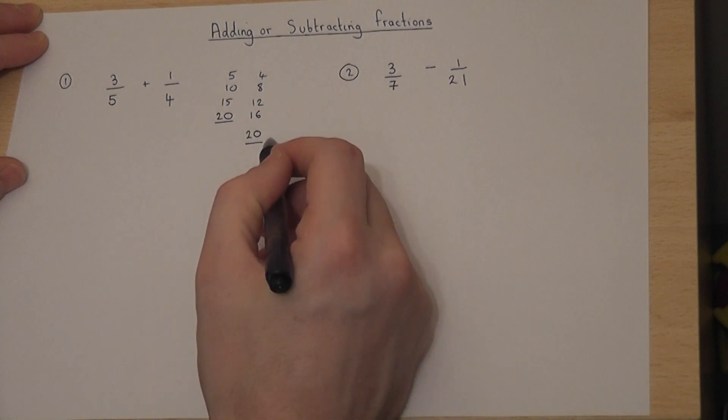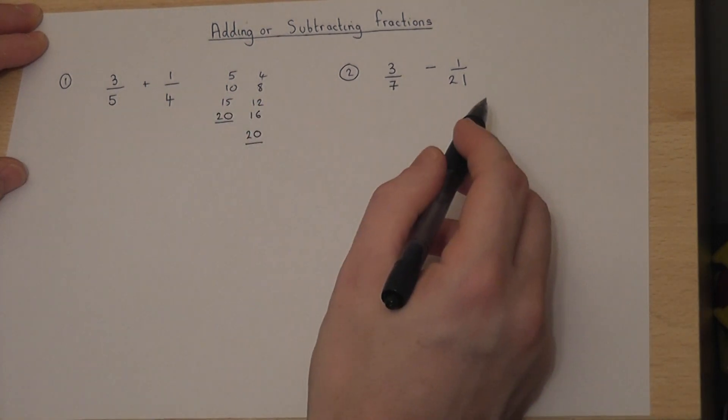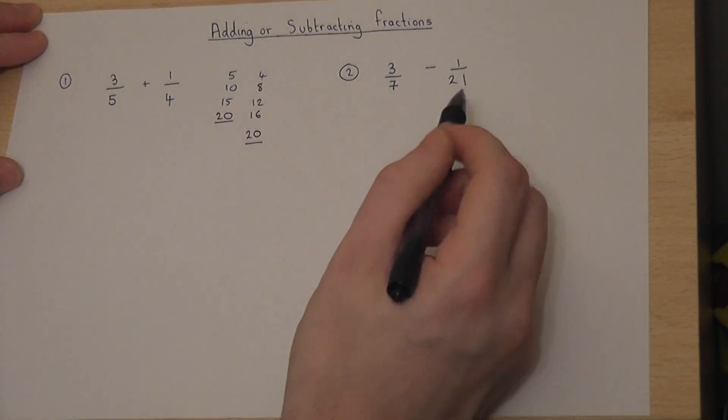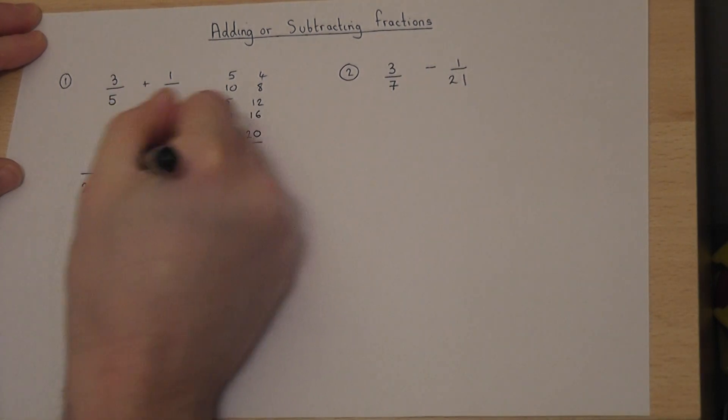So 20 is the lowest common multiple of 5 and 4. I can write both these fractions over 20.